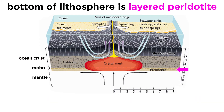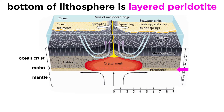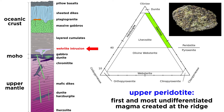At the very bottom of the lithosphere is rock called layered peridotite. The upper portion of this layer is composed of crystallized ultramafic partial melts of the mantle below, called wherlite. This material represents the first and most undifferentiated magma created at the ridge.